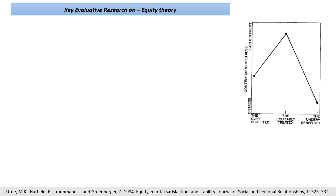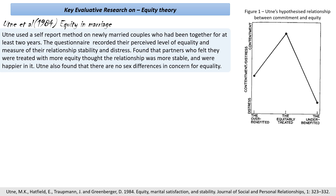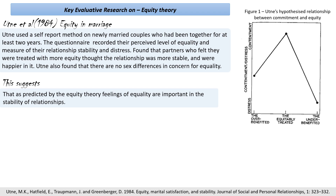Ute and colleagues in 1984 researched equity in marriage using self-report questionnaires on newly married couples who had been together for at least two years. The questionnaire measured perceived level of equality in the relationship, relationship stability, and feelings of distress. Ute predicted that commitment would only be high for those who felt treated with equity, and lowest for those who under-benefited. The findings confirmed that partners who felt treated with more equity thought the relationship was more stable and were happier in it. Ute also found no sex differences in concern for equity — both males and females considered it important.